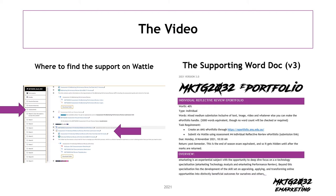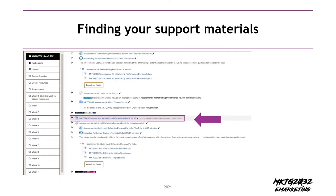Quick updates — things you need to know. This video will be up through the usual channels. The supporting Word document has been significantly updated, so that's now in version 3.0, and this will be of interest to you because it contains new information for completing the assessment task effectively. It is loaded up on the Wattle site under the assessments section — there are arrows on screen pointing out where you can find it. If you can't find it, let me know; I'll have probably posted a link in the forums.